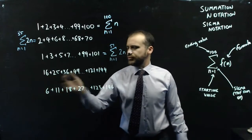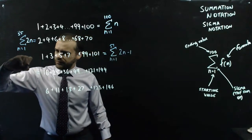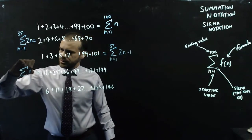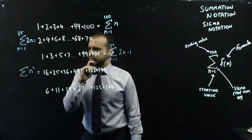What about this, all of the square numbers? Well, this time we can mess with our starting value a little bit because we want all of our square numbers. So I'm just going to put n squared here. And where do I want to start?